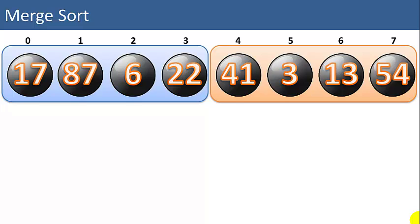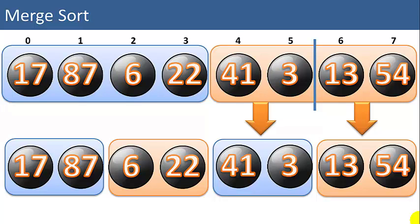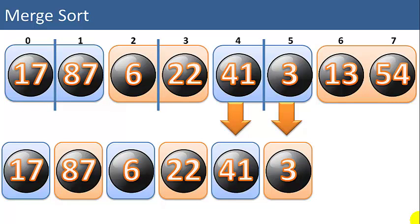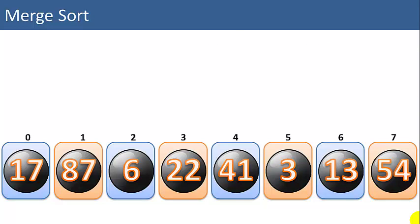Then we're going to take those 2 sub-lists and cut each of those in half into 2 smaller lists. Now we have 4 lists with 2 items each, all in unsorted order. We're going to break the list down one more step into 8 lists with 1 item in each list. Since there's only 1 item in each list, we know that each list is sorted — if you have a list that only contains 17, then 17 is in sorted order. So now we have 8 lists that are in sorted order, and we just need to merge them back together into one 8-item list.